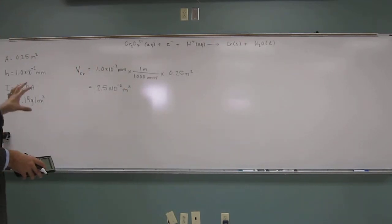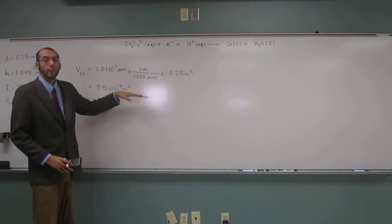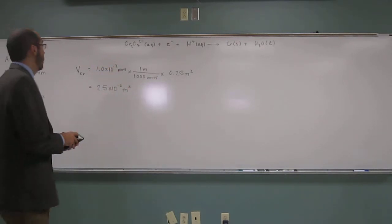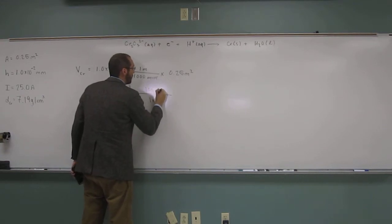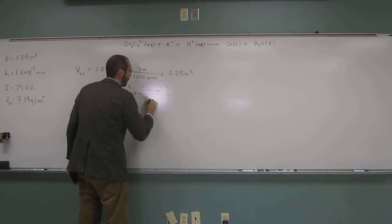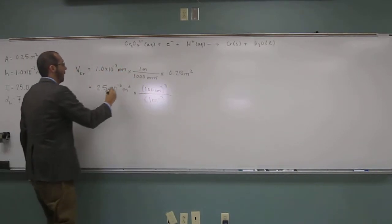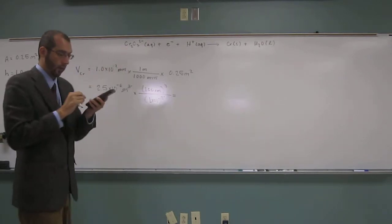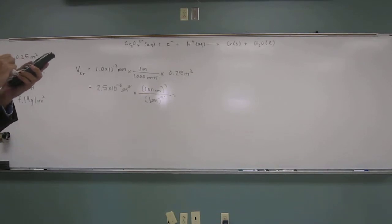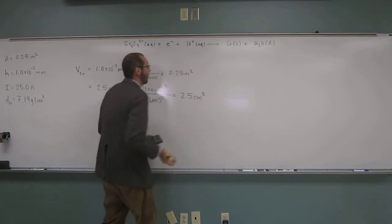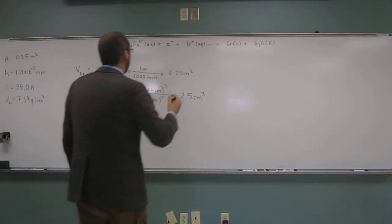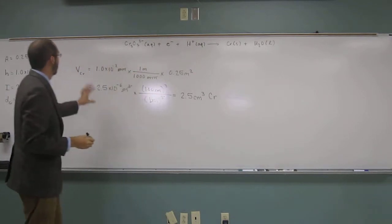So now, remember, 1 meter equals 100 centimeters. We're trying to get to centimeters because I want to figure out how much grams of chromium are we going to have. But 1 meter cubed equals 100 centimeters cubed. So in order to do that, remember the conversion factor. So 1 meter, 100 centimeters, but we're going to cube both of those, like that. So that'll cancel with that, and then when we do this, we get 2.5 centimeters cubed.